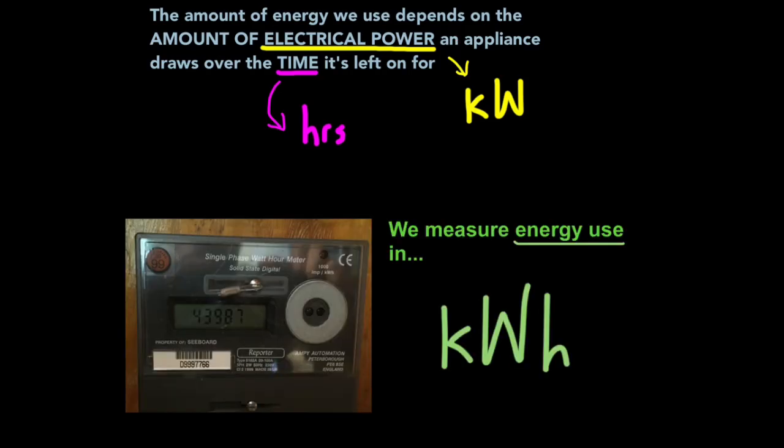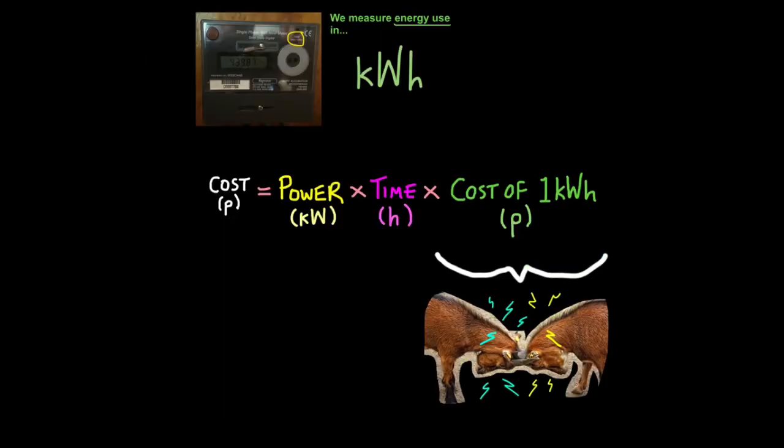So electrical companies charge us for energy use in kilowatt hours. This also sorts out the problem of having huge numbers on your electricity bill. Electricity meters you find in your home, like my one here, gives you a reading in kilowatt hours. And your electricity company just simply charges you for the amount of kilowatt hours used every month or every year, depending on the terms of your contract.